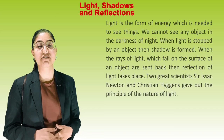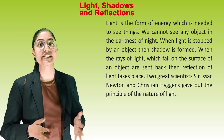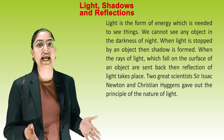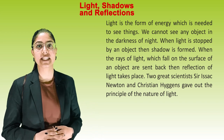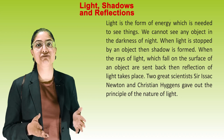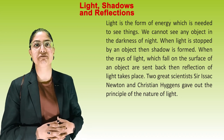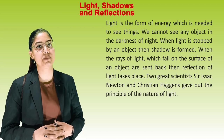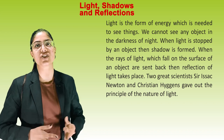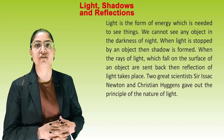Light is the form of energy which is needed to see things. We cannot see any object in the darkness without light. When light is stopped by an object, a shadow is formed. When the rays of light which fall on the surface of an object are sent back, reflection of light takes place. Two great scientists, Sir Isaac Newton and Christiaan Huygens, gave out the principle of the nature of light.